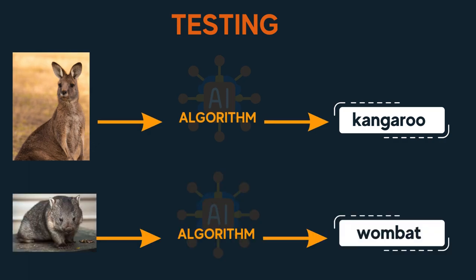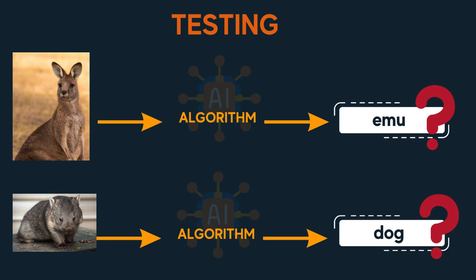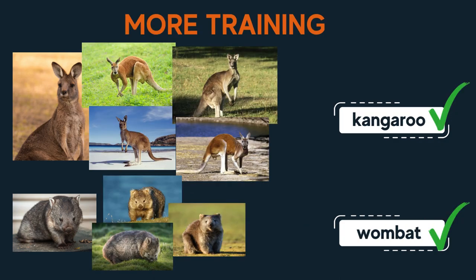Similar to humans, machines can also make mistakes and produce errors. If the machine does not operate as expected, it needs to be trained using more examples.